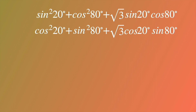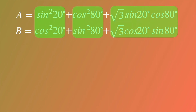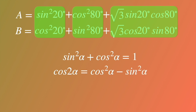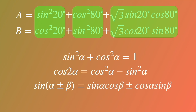Then what to do with this dual form? Let A equal the original expression and B equal the dual form. We will find there are sines and cosines in the two expressions. Recall: sine squared plus cosine squared equals 1; cosine of 2 alpha equals cosine squared alpha minus sine squared alpha; sine of alpha plus or minus beta equals sine alpha cosine beta plus or minus cosine alpha sine beta.